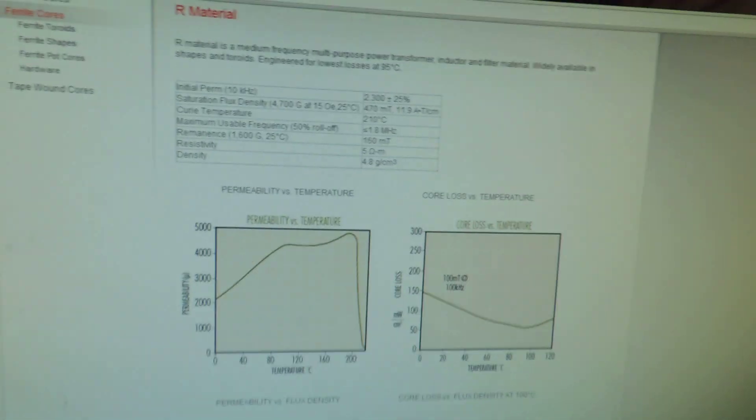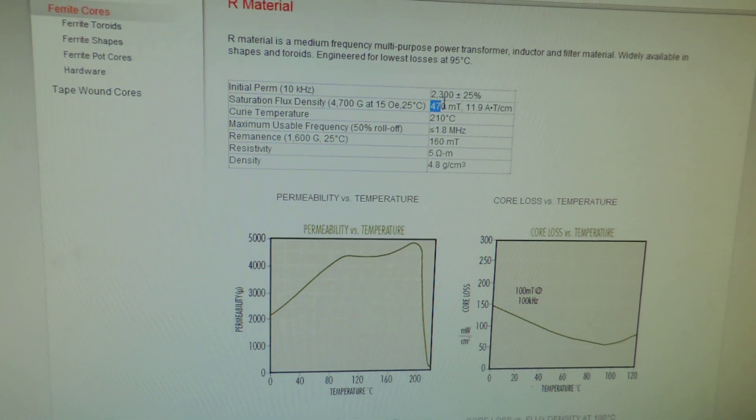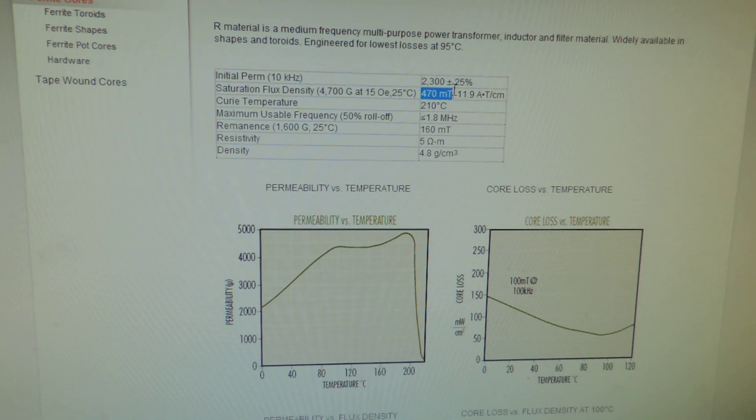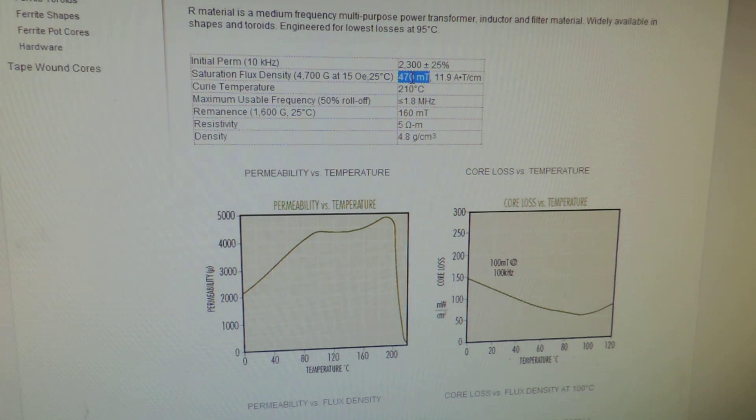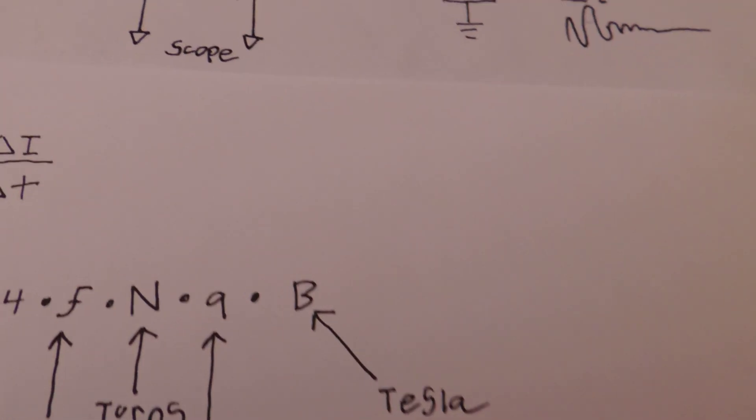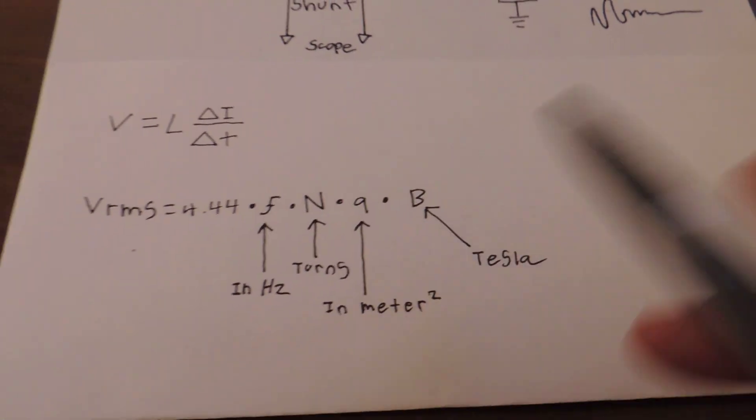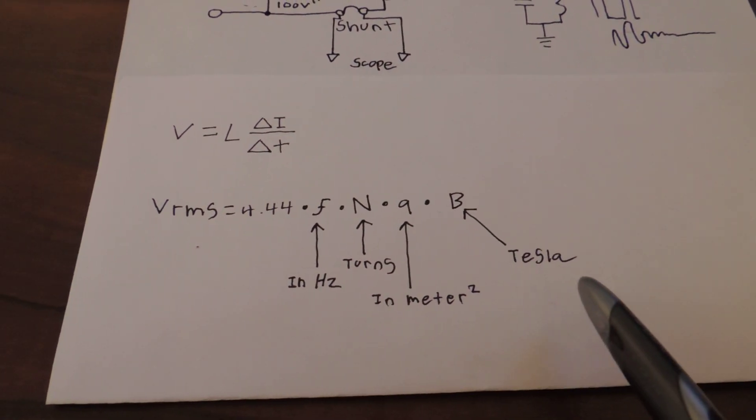Once again, we choose our value for Tesla, or for B, based on the manufacturer's specifications. So back to that large ferrite toroid that we talked about in the previous video. This particular max flux density is 470 milliTesla, or 0.47 Tesla. This particular value is important because it'll tell you what your core can handle as far as flux density.